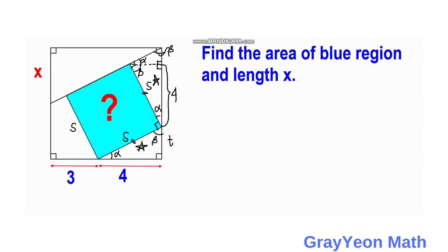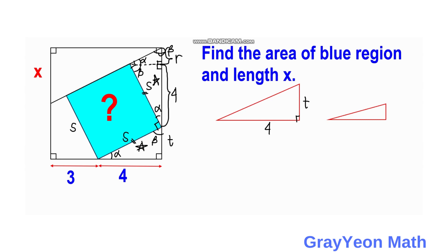Next, we label the length of this smaller triangle as r. We compare the two right triangles: the larger one has sides of 4 and t, and the smaller one has sides r and t. So we can say that t over 4 is equal to r over t, which gives us r is equal to t squared over 4.